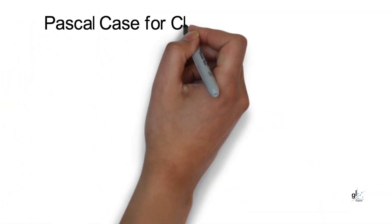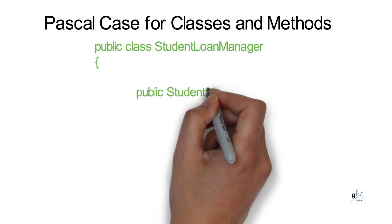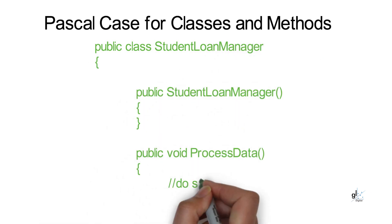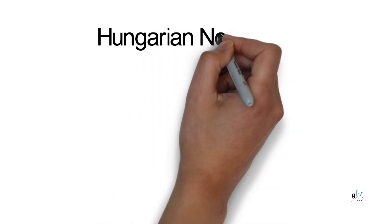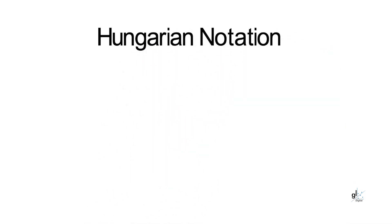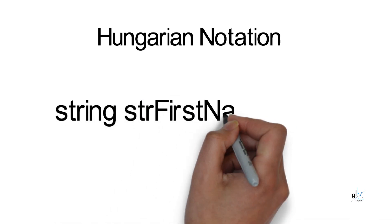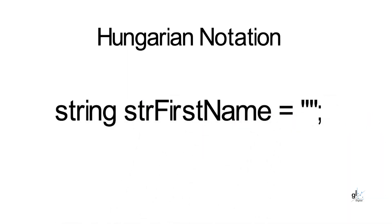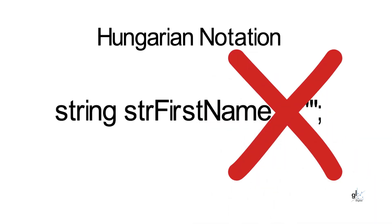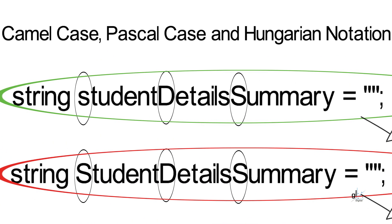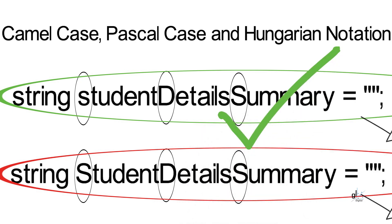Pascal case means that all distinct words in the identifier must have the first character in uppercase for all of the distinct words. Hungarian notation should be avoided in defining variables. This simply means, for example, the first name variable using Hungarian notation could contain the prefix 'str', denoting the data type with which the variable is defined — the string data type. So camel case is recommended for defining local variables for methods and private member variables for classes.